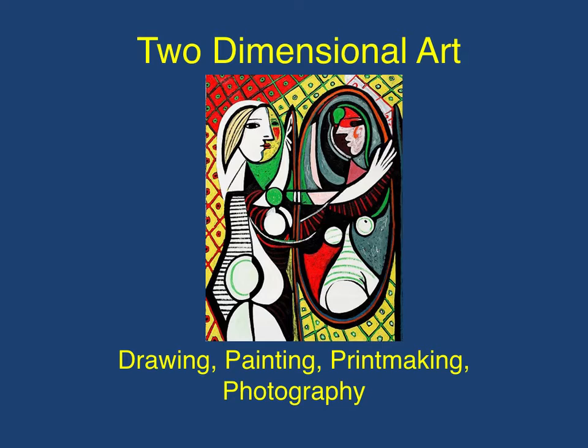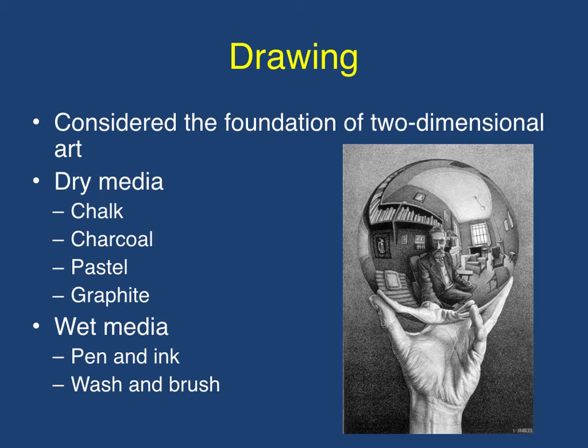In this chapter we will be looking at two-dimensional art. This lecture is meant to accompany the reading you've already done in chapter one of your textbook. Two-dimensional art is made up of four different types of art which include drawing, printmaking, painting, and photography.